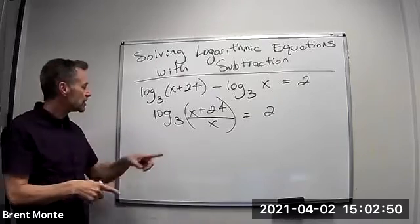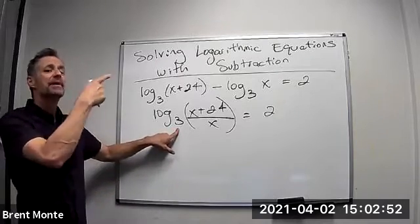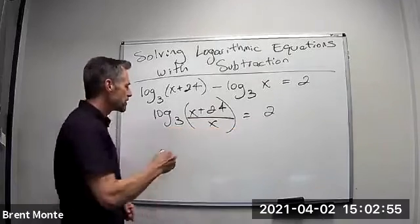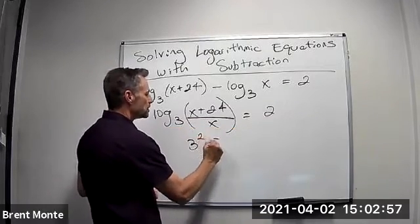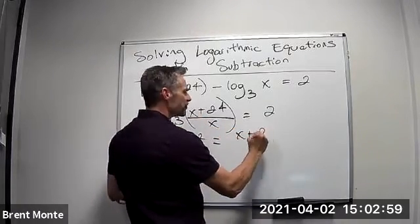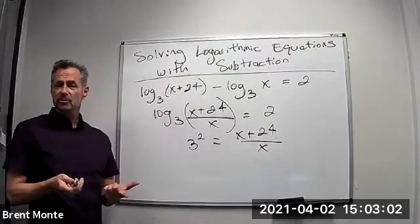Now that I have it as a single log, I can change it to exponential form. I take the base 3 and that becomes the base of the exponential: 3² equals (x+24)/x. Now it's just an algebra problem.